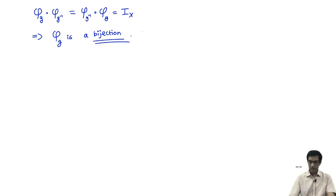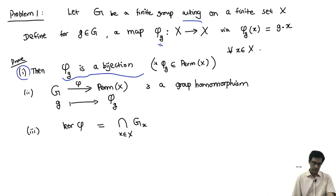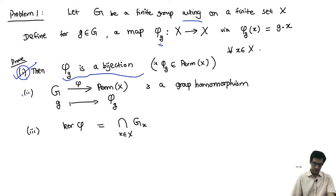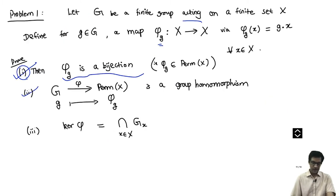That proves part 1 of the proposition. In fact, along the way we have also proved part 2 — that the map φ is a group homomorphism — because properties A and B say exactly that φ_{GH} maps to φ_G ∘ φ_H and φ_{identity} maps to the identity. Now let us prove part 3: the kernel of φ equals the intersection of the stabilizers.